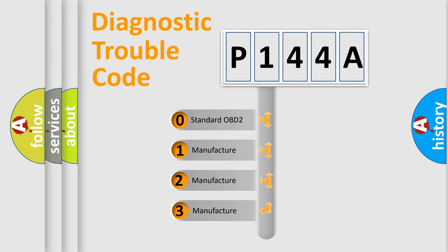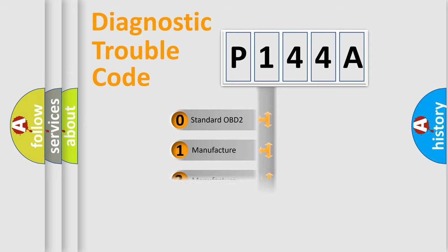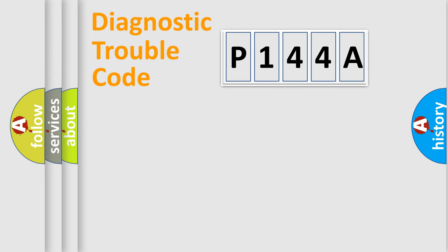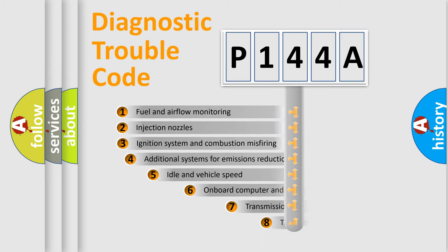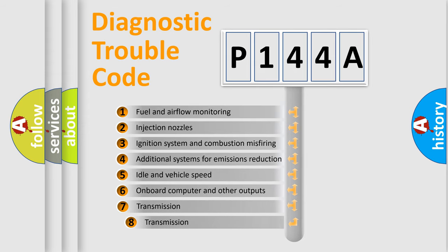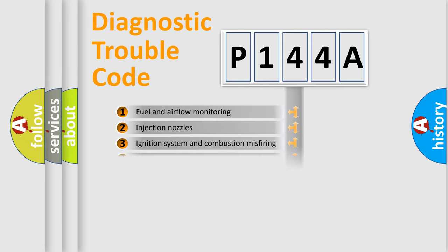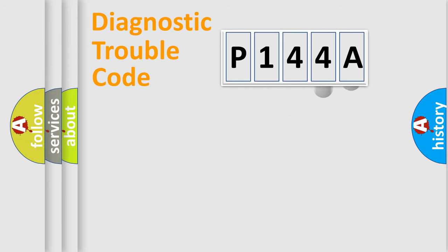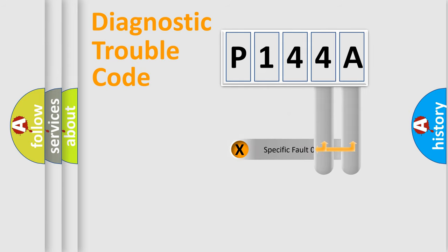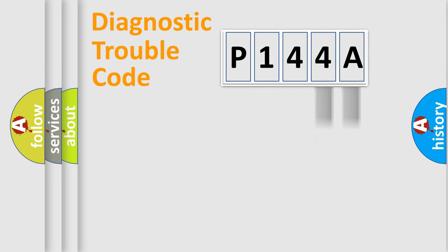If the second character is expressed as zero, it is a standardized error. In the case of numbers 1, 2, or 3, it is a more manufacturer-specific expression of the car error. The third character specifies a subset of errors. The distribution shown is valid only for the standardized DTC code. Only the last two characters define the specific fault of the group.